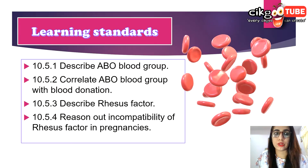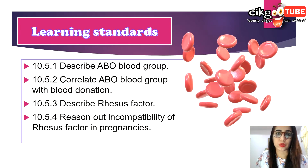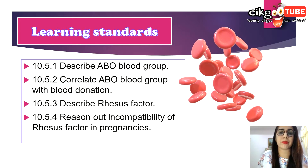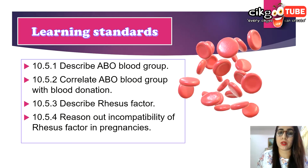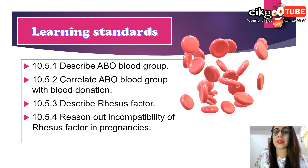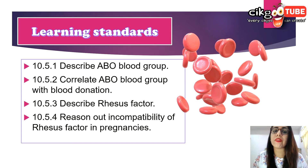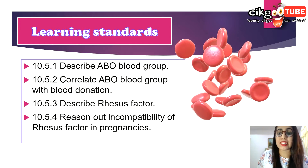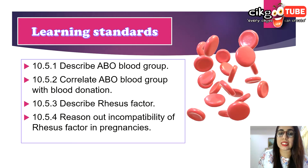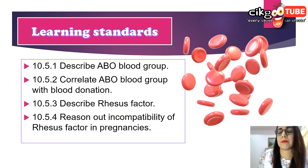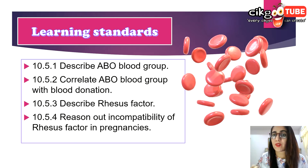As usual, we have to go through the learning standards. In this subtopic you should be able to describe the ABO blood group, correlate the ABO blood group with blood donation, describe the rhesus factor, and also reason out the incompatibility of the rhesus factor in pregnancy.